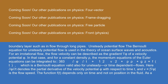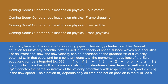Here, ∂φ/∂t denotes the partial derivative of the velocity potential φ with respect to time t, and v = ∇φ is the flow speed. The function f(t) depends only on time and not on position in the fluid. As a result, the Bernoulli equation at some moment t applies in the whole fluid domain. This is also true for the special case of a steady irrotational flow, in which case f and ∂φ/∂t are constants, so the equation can be applied in every point of the fluid domain.